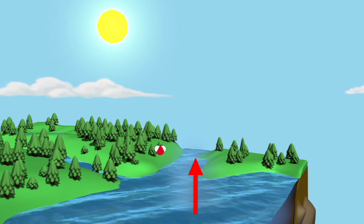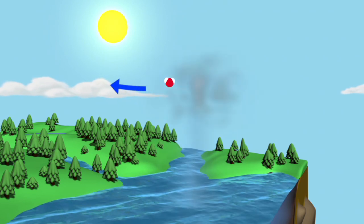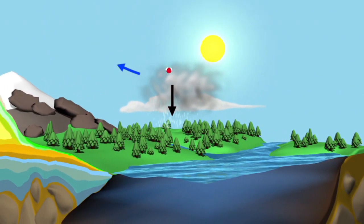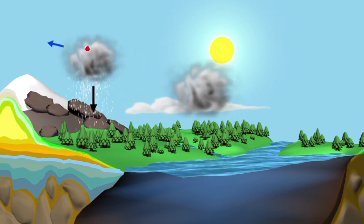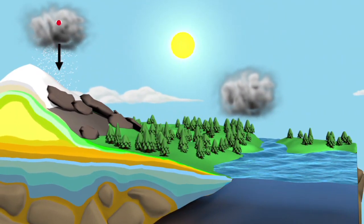Heat from the sun causes the molecule to evaporate from the ocean's surface. Once it evaporates, it is transported into and through the atmosphere, where water vapor condenses, releasing its heat to form clouds.